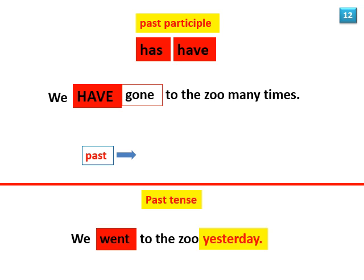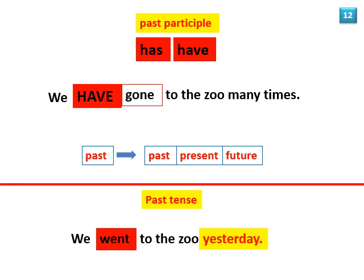You use have plus past participle when an event in the past is related to a later time in the past, or to the present or future. For example: 'We have gone to the zoo many times, so we may not want to go there again.' Or: 'We had gone to the zoo many times, so we did not want to go there again.' You use the past tense when the time of the event is mentioned and it has no relation to any other time — for example: 'We went to the zoo yesterday.'